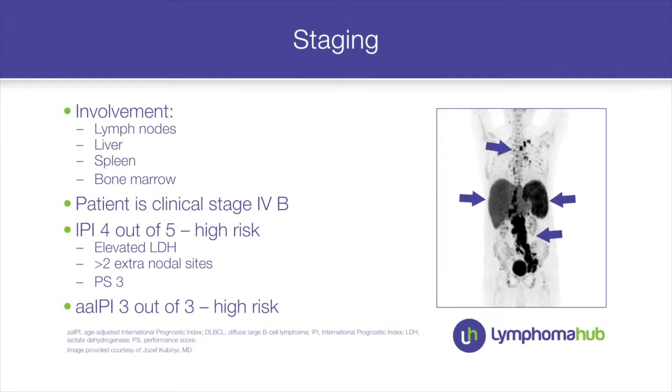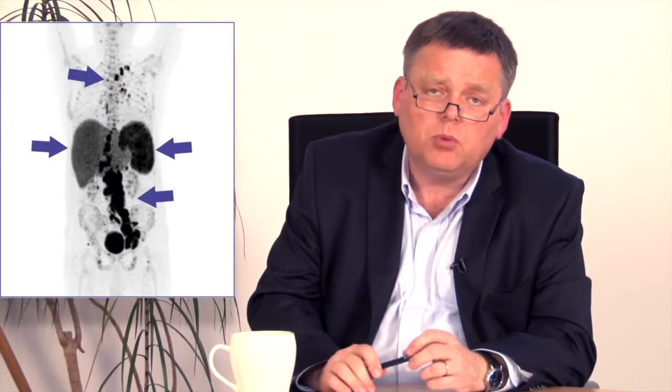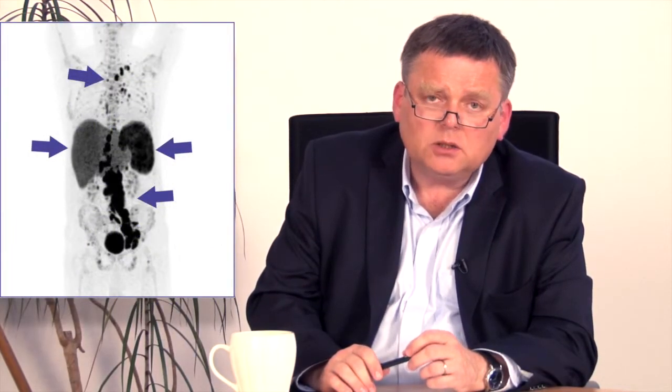Staging revealed, besides lymph node sites, liver involvement, spleen involvement, and bone marrow involvement — concluding clinical stage 4B with systemic symptoms. According to the International Prognostic Index, the patient had a high-risk profile due to elevated LDH, more than two extranodal sites involved, and poor performance status.